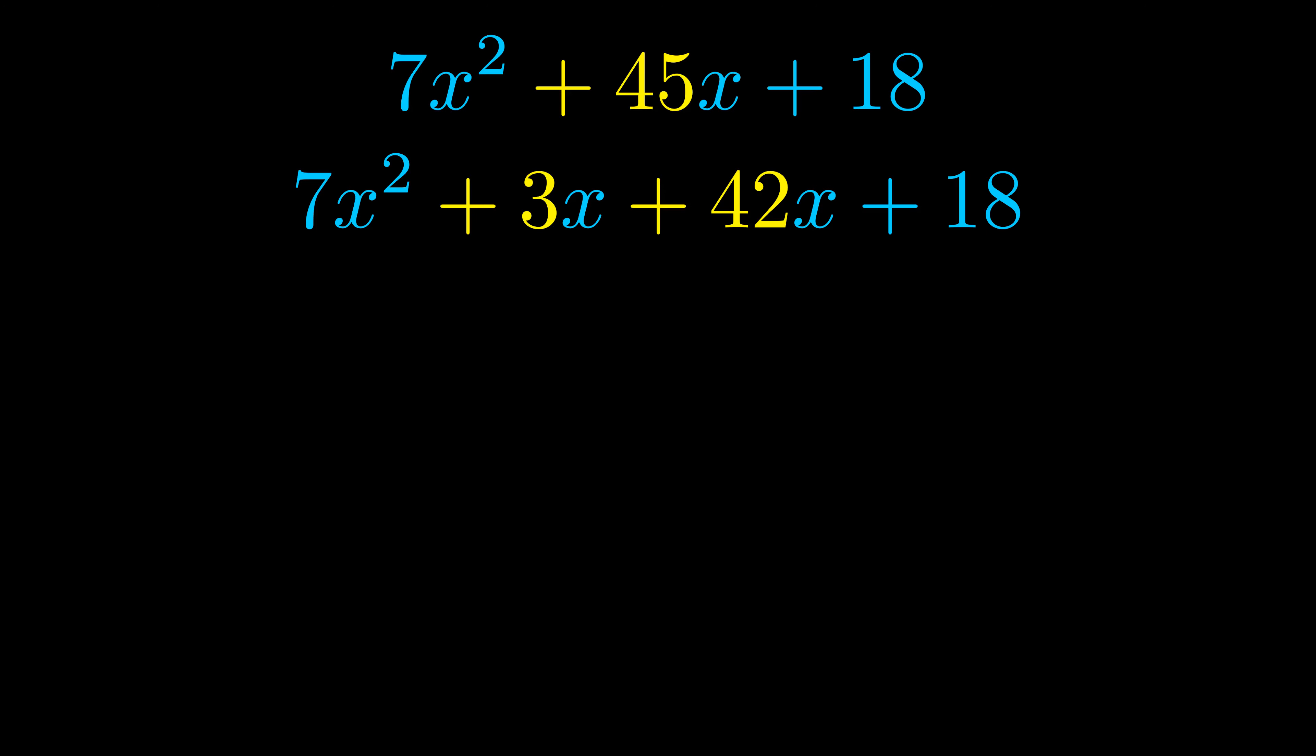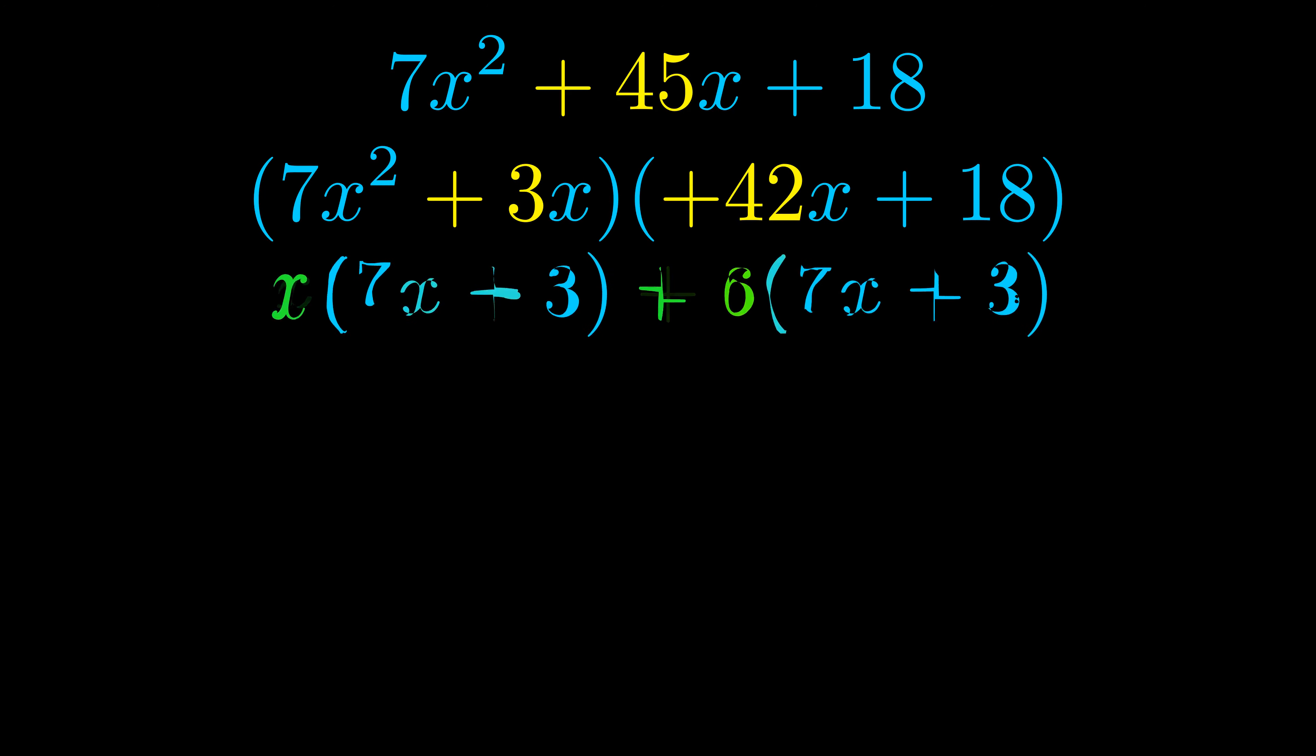Once we've done this we go ahead and we put parentheses around the first term and the last term. And we do that so that we can take the greatest common factor out of both terms. We can see the greatest common factor is now outside in green. Notice also how what remains inside of the parentheses is the same in both cases.